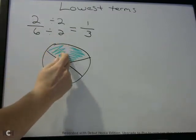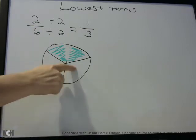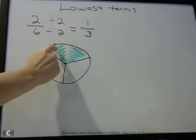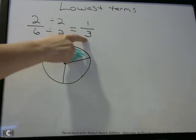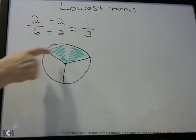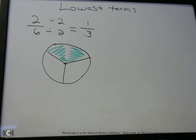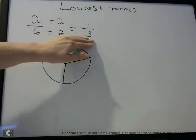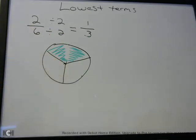Now let's take those dividing lines out. Now we only have 3 pieces of the pie, and one of them is colored in — so now it's 1/3. So 2/6 is really the same as 1/3. We didn't color in any more spots on the pie. So 2/6, when we put it in simplest form or lowest terms, comes down to 1/3. We're just taking fractions and getting them to the lowest numbers we can, but they are actually equal.